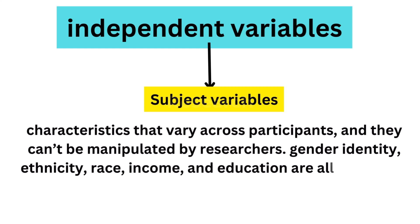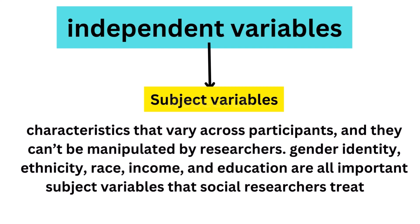ethnicity, race, income, and education are all important subject variables that social researchers treat as independent variables.